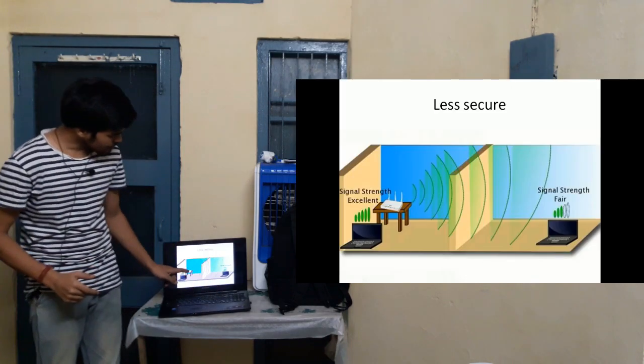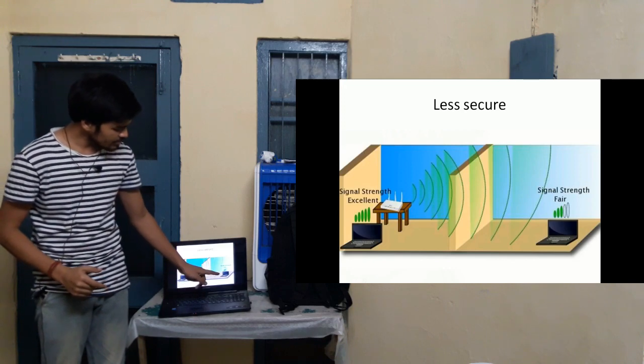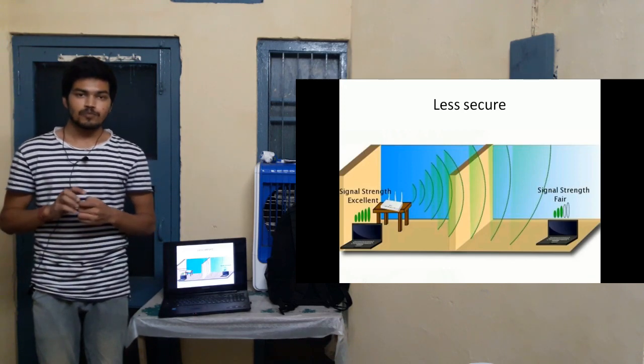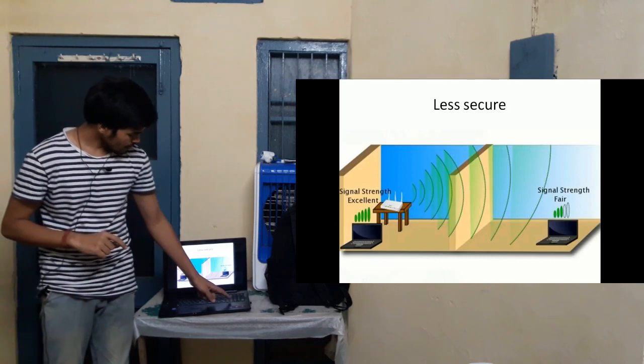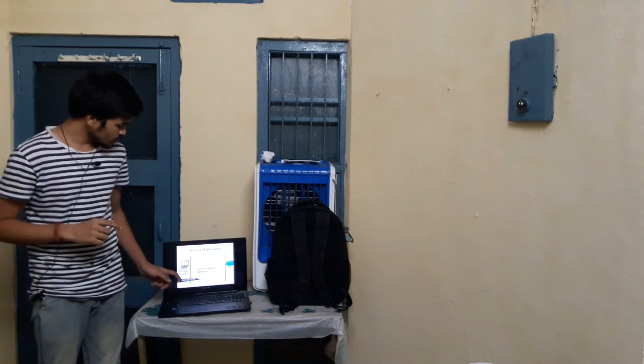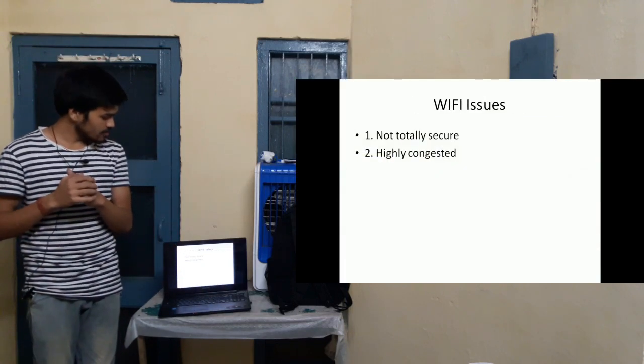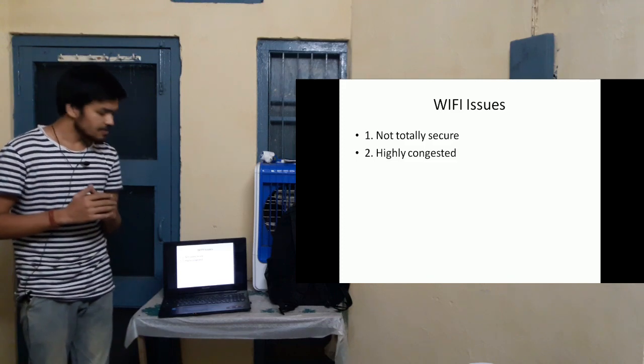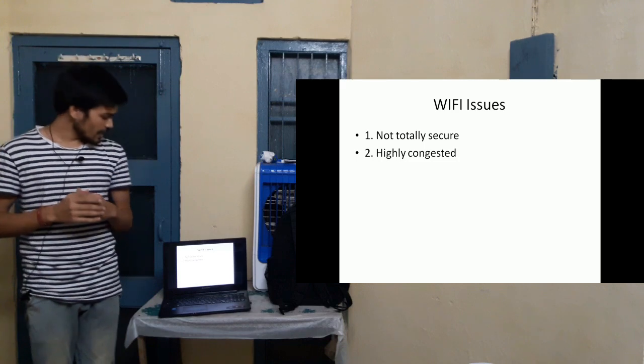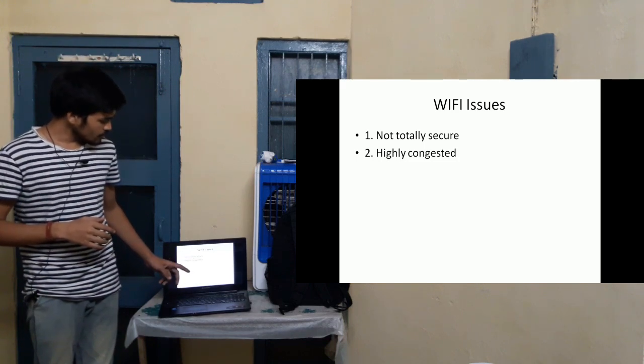With all that being said, Wi-Fi still has some issues. It gets sketchy sometimes when the signal is weak, and it is less secure because your signal can travel through walls and can easily be picked up by someone else. The reason for that problem is that Wi-Fi uses radio waves. The main issues are that Wi-Fi is not totally secure and it is highly congested.